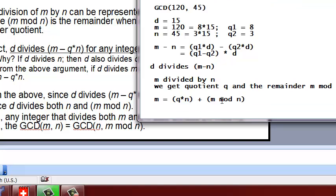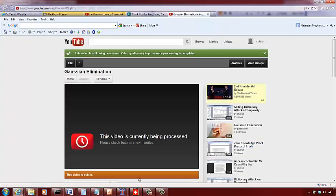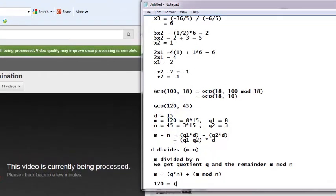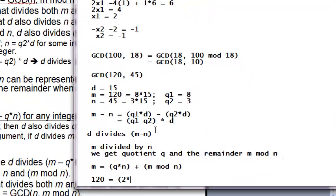For example, when you divide 120 by 45, I can say 120 equals the quotient, which is 2, 2 times 45, the 45 is n, plus the remainder 120 mod 45, which is going to be 30.